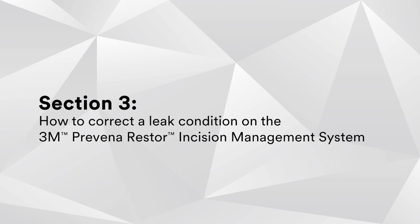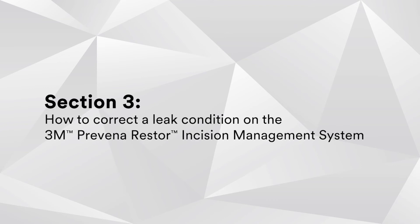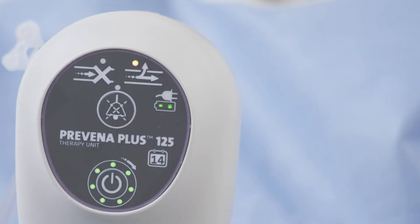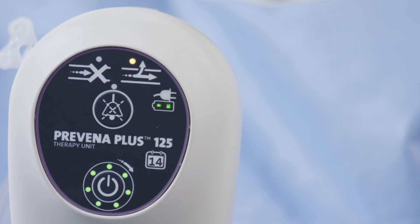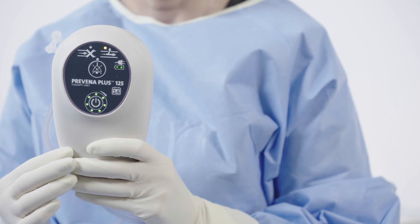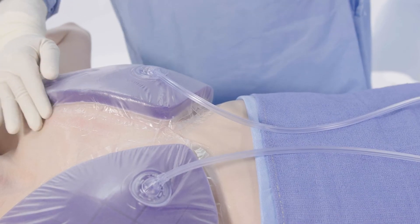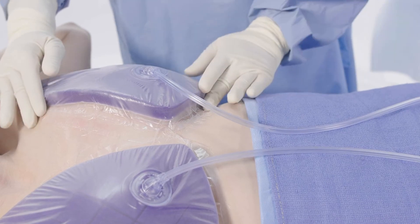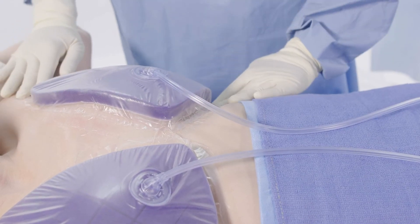Let's now move to our final section: how to correct a leak condition on the Praveena Restore incision management system. If there is a leak around the dressing, a solid yellow LED will turn on above the leak symbol on the device. The leak alert will sound two beeps, repeating every 15 seconds. To correct a leak and create an adequate seal, follow these steps.